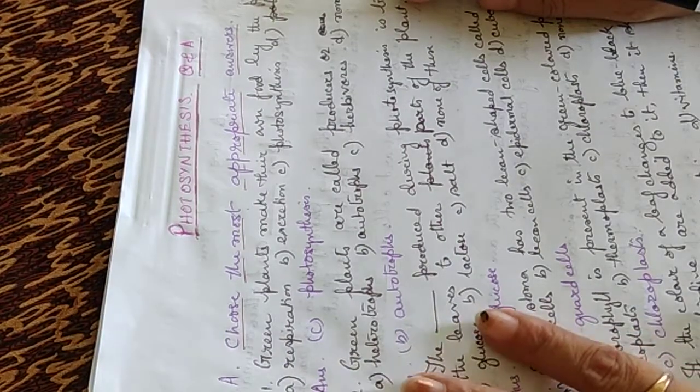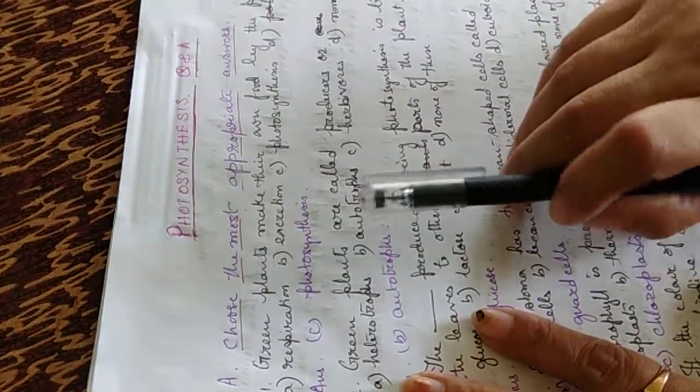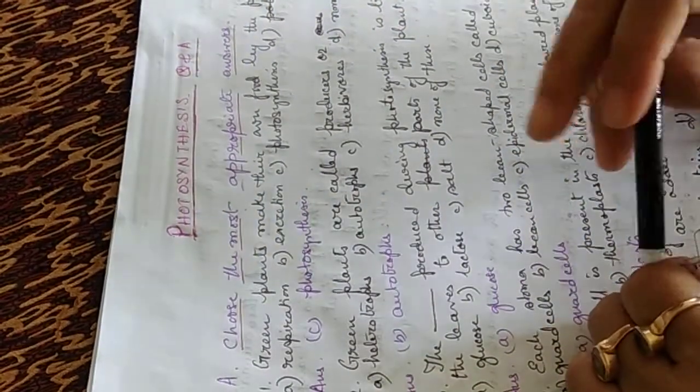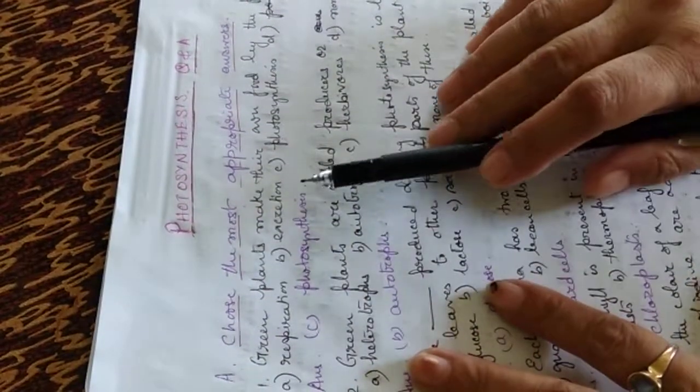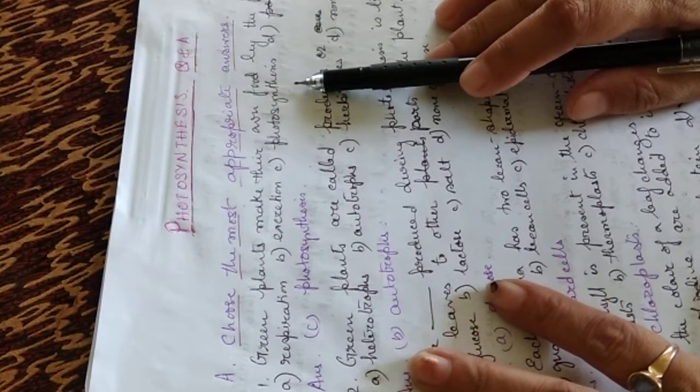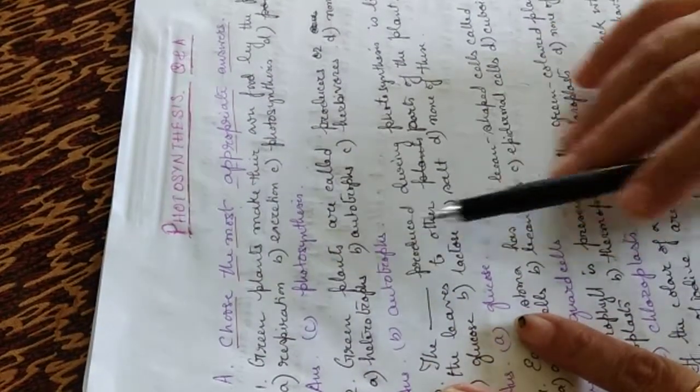Green plants make their own food by the process of - the options are respiration, excretion, photosynthesis, and pollination. The answer is photosynthesis.